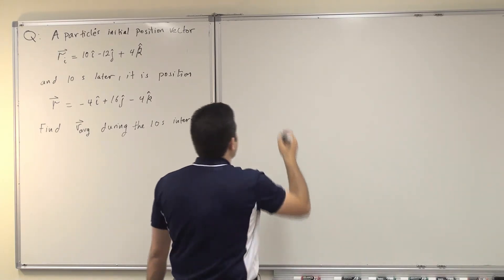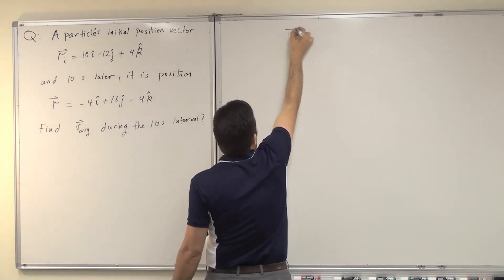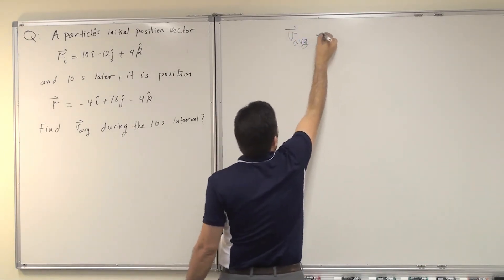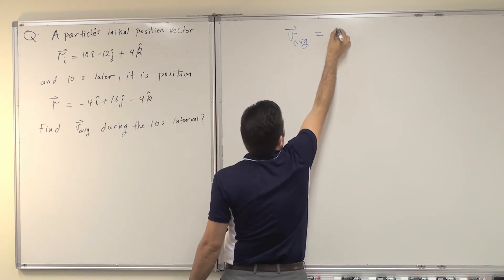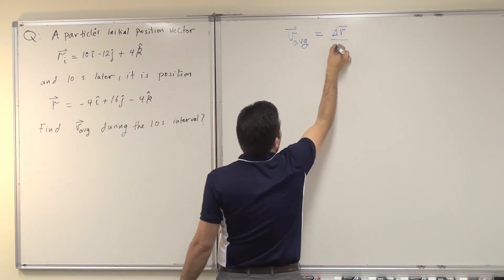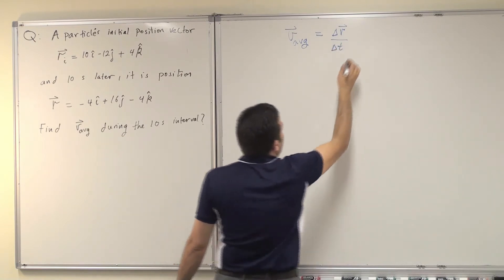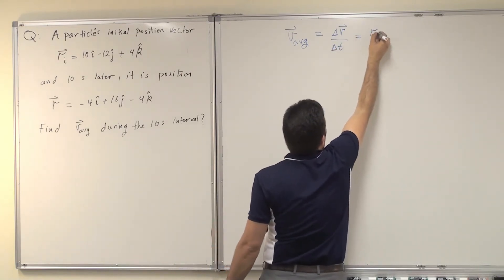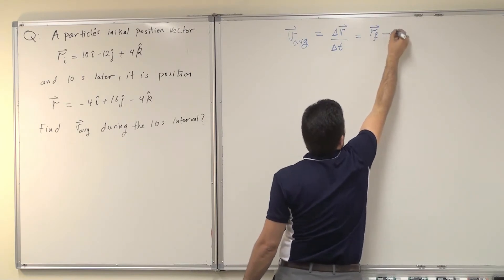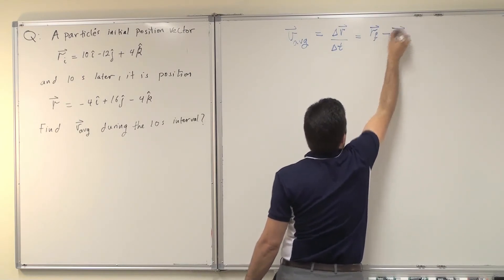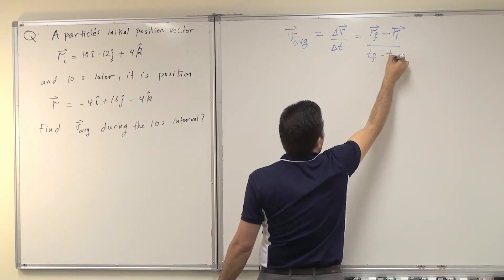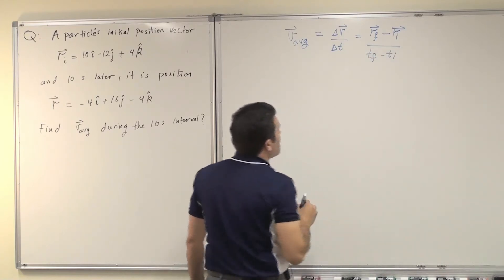In order to find the v-average, the average velocity is defined as change in displacement, or delta r, divided by delta t. And delta r is the final position minus the initial position, over t-final minus t-initial.